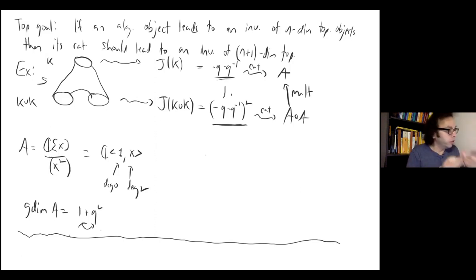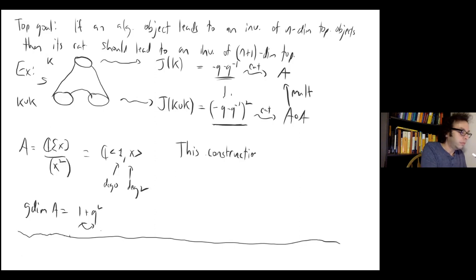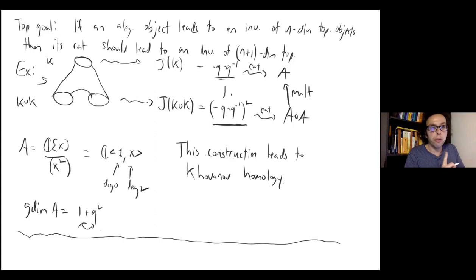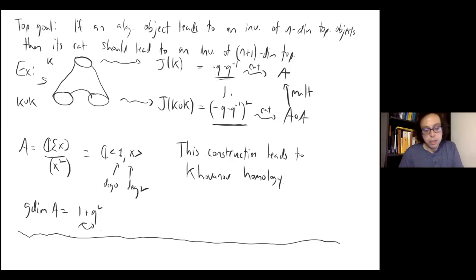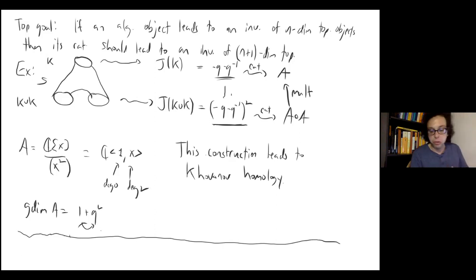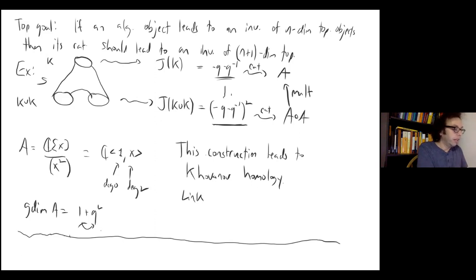Khovanov upgraded the Jones polynomial to a homology theory as follows: a link has N crossings. For each crossing, you can resolve it in two different ways — a 0-resolution (straighten it out) or a 1-resolution (smooth it). So for N crossings there are 2^N possible resolutions. After resolving all crossings in any given way, you are left with a collection of circles.